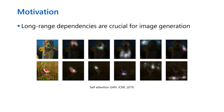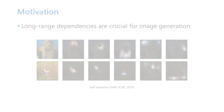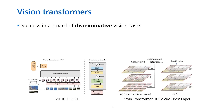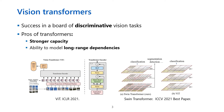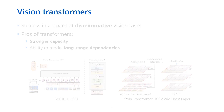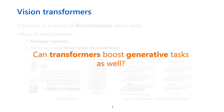Previous works have shown that long-range dependency modeling is crucial for image generation. It is hard for GAN-based methods to handle this long-range dependency using small local convolutional windows. Recently, vision transformers have achieved remarkable results in discriminative tasks and have shown stronger capacity than ConvNets, including the ability to model long-range dependency. So we ask: can we use transformers to boost generative tasks as well?